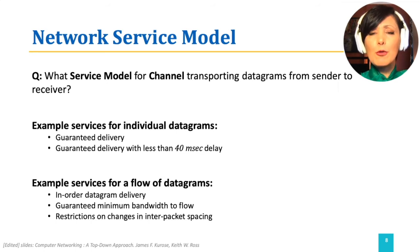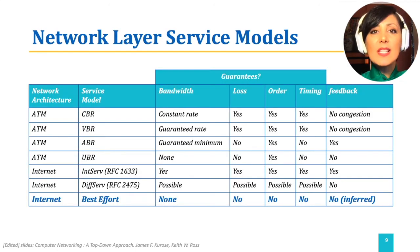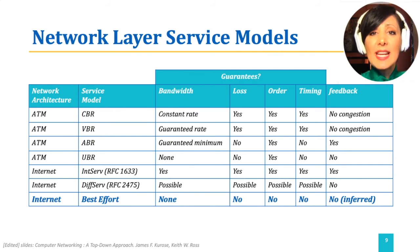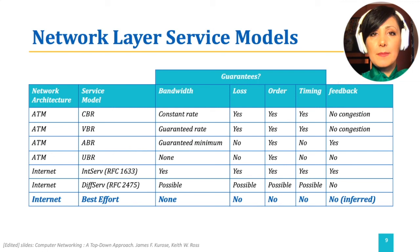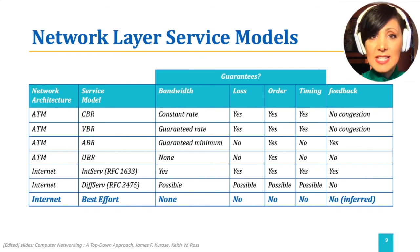For us examining the network layer of the internet, which of these services are actually supported? Guarantees on timing, loss, ordering, and bandwidth are possible. For example, other network architectures such as ATM — asynchronous transfer mode — support such guarantees. Proposals of integrated services and differentiated services, as in RFCs 1633 and 2475, also exist for extending the internet architecture. However, the current internet architecture, as implemented and adopted for today's services, is a best-effort service with no guarantees whatsoever.